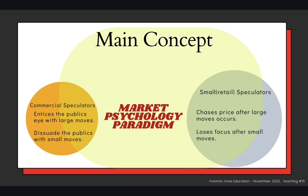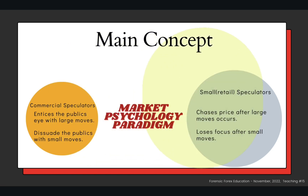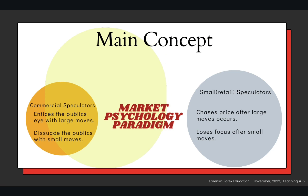This brings me to the main concept of the lesson. There is a market psychology paradigm occurring in all marketplaces — whether that is cryptocurrencies, foreign currencies, futures, bonds, commodities, and so on. We know that the commercial speculators are the ones that control price, and the small speculators, also known as retail traders, are trading within a liquidity pool that exists because of the commercials. The commercial speculators are doing two things simply: enticing the public with large moves — increasing the range of candles to get the public overly excited and invested in the asset class being traded.